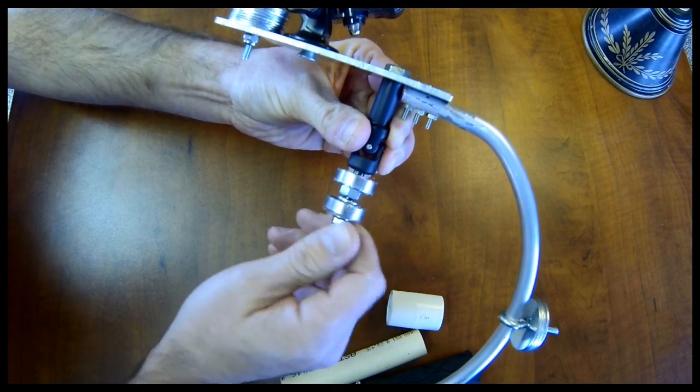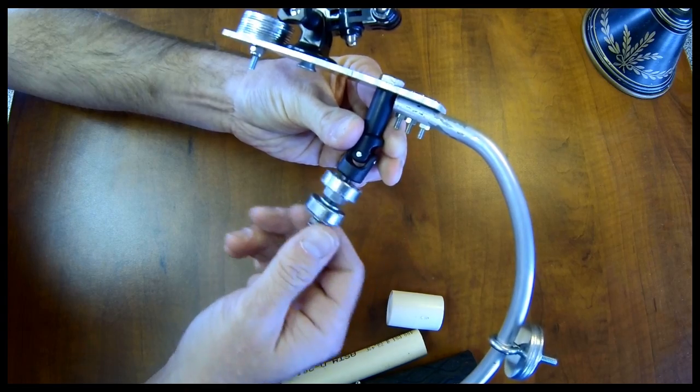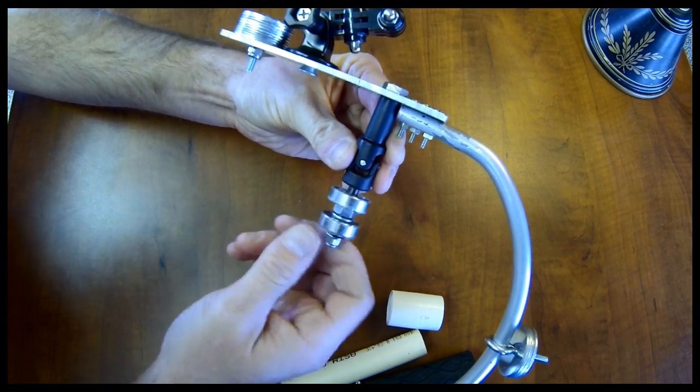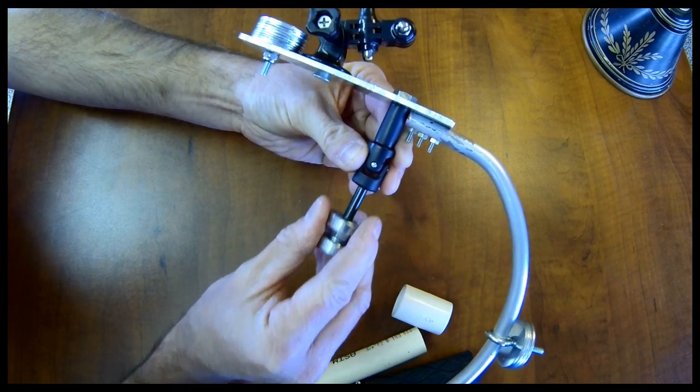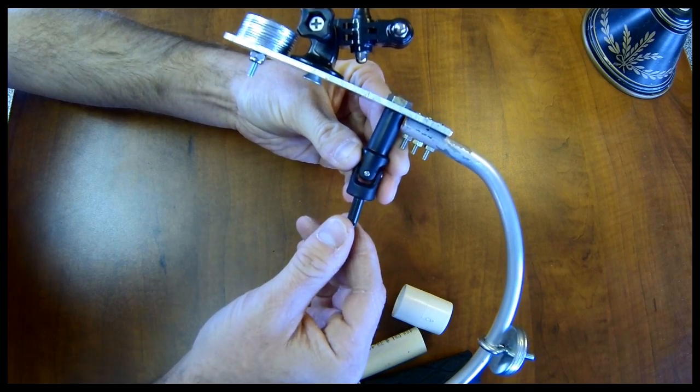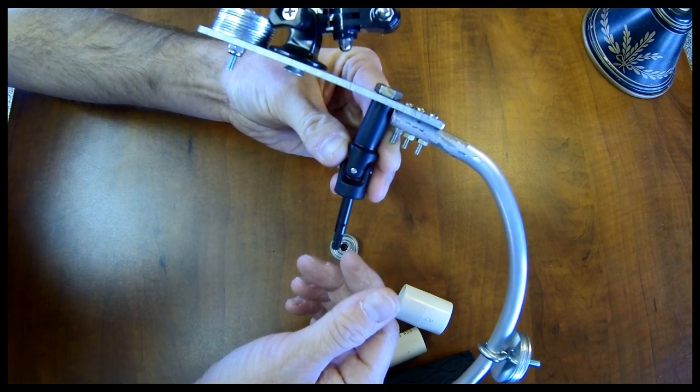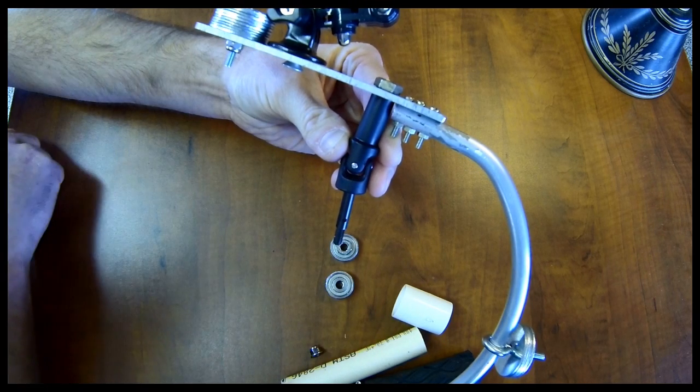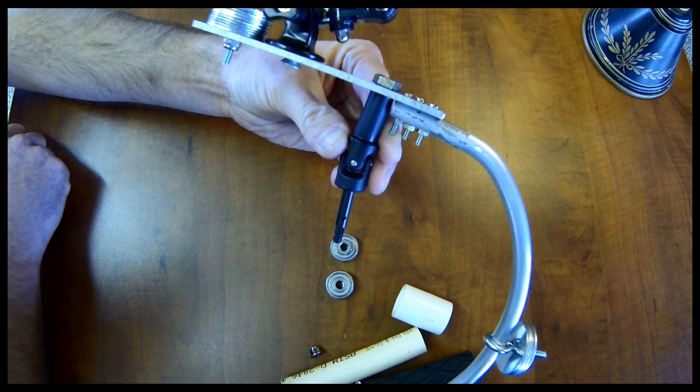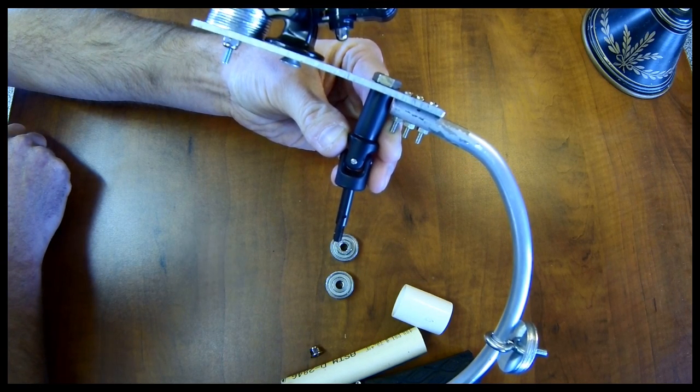They sit on a Traxxas U-joint like a lot of guys are using. But I used a Traxxas stub axle for a T-Max 2.5. As close as I can tell, this is probably part number 4953.